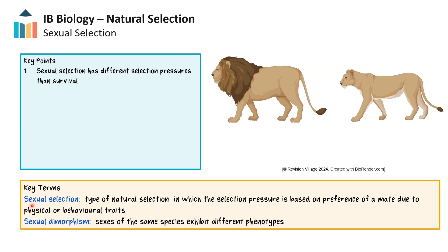Sexual selection is a form of natural selection where individuals with certain traits are more likely to obtain mates and reproduce. These traits may not necessarily improve survival, but can enhance an individual's chance of reproducing. For example, in species like the lion, where females are limited in the number of offspring they can produce in a season and males are not, females will tend to be selective about the males they choose for mating, as the male genes affect the fitness of their limited offspring. This can lead to sexual dimorphism, where males and females of the same species have different physical or behavioral traits. Male lions, for instance, grow a mane that is meant to increase their chances of being selected to mate by a female.